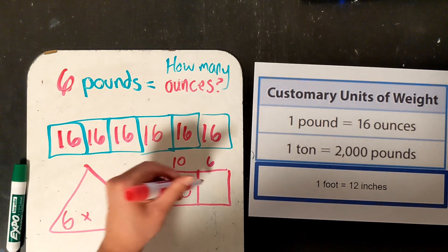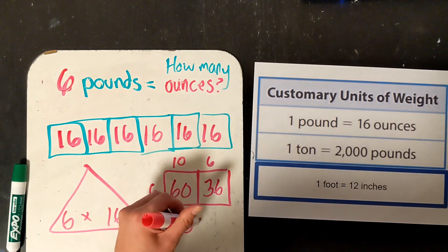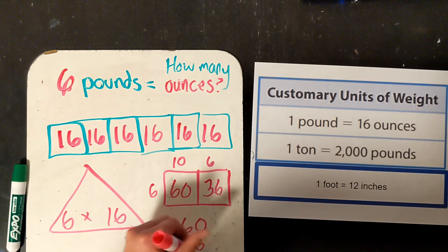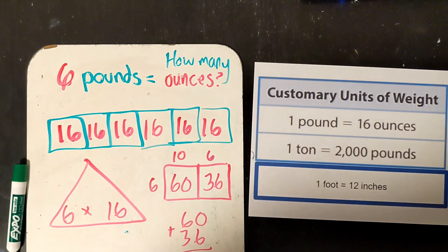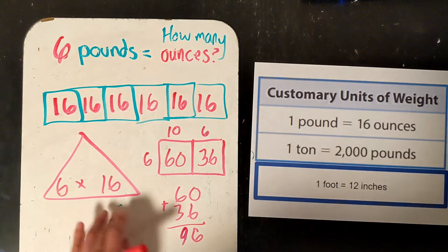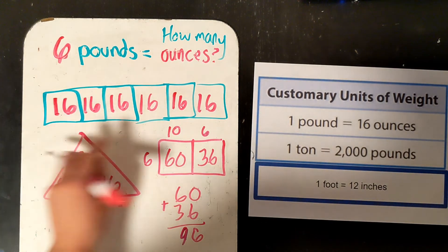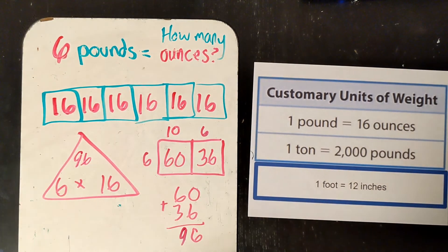So 10 times 6 is 60. 6 times 6 is 36. 60 plus 36 is 96. So, 6 times 16 is 96. There are 96 ounces in 6 pounds.